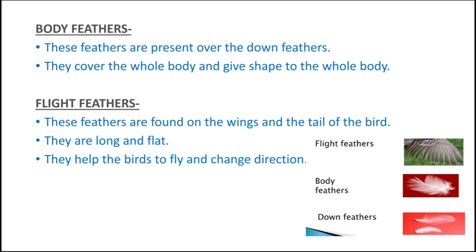The third type of feather is flight feather. These feathers are found on the wings and tail of the bird. They are long and flat and they help the birds to fly and change direction. You can see in the picture how these feathers look. The first one is the flight feather, the second is the body feather, and the last one is the down feather.